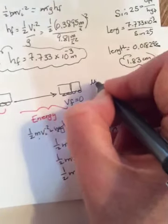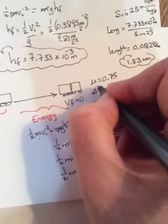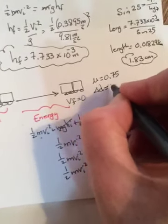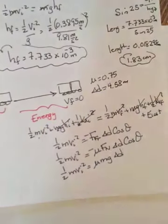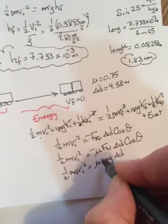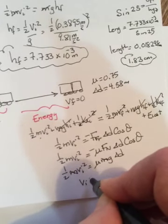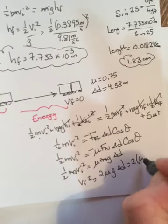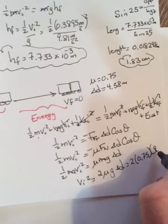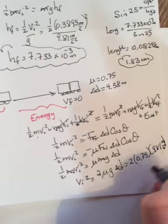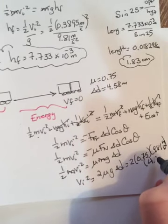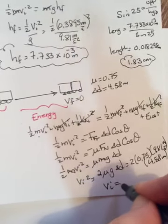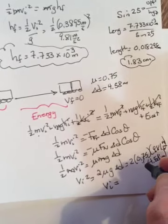All right, it tells us the coefficient of friction was 0.75, it tells us they slide a distance of 4.58 meters. The m's will cancel because they're both cars stuck together. We can find the vi, so it'll be 2 mu g delta d. So 2 times 0.75, 9.81 meters per second squared, and the delta d was 4.58. Remember that's vi squared, so take the square root and when you do you get 8.21 meters per second.